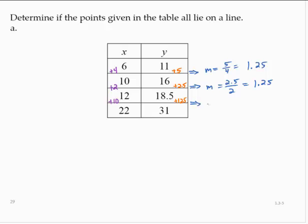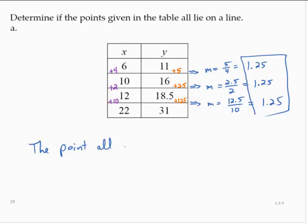And between the third and fourth ordered pairs, we would have m equals 12.5 over 10, which is again 1.25. Since we see a constant slope, the points all lie on the same line.